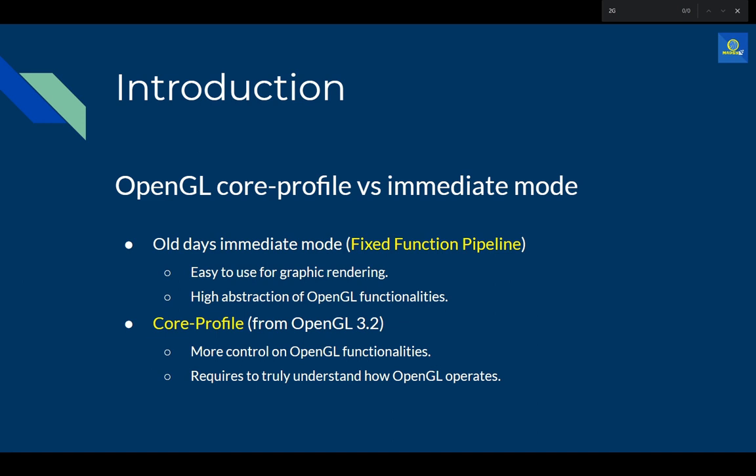The fixed function pipeline was easy to use, but programmers always need more control — that's why it wasn't ideal. The core profile is the new way, available since around OpenGL 3.1 or 3.2. It gives the programmer much more control over what happens behind the scenes, which is why we see such good graphical results today in engines like Unity or Unreal Engine.